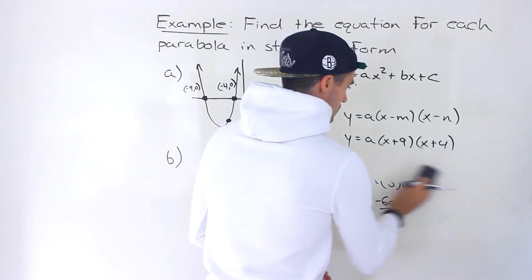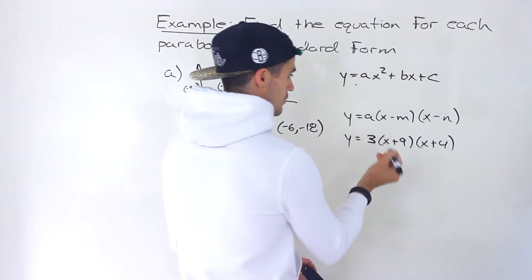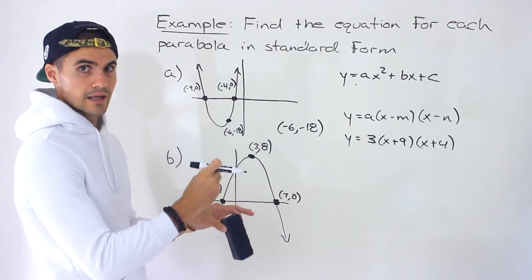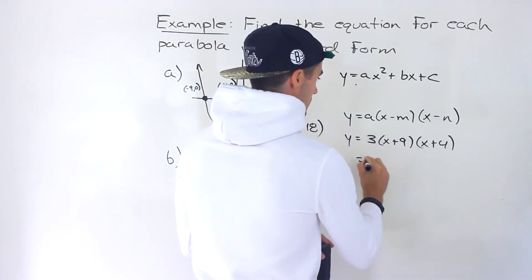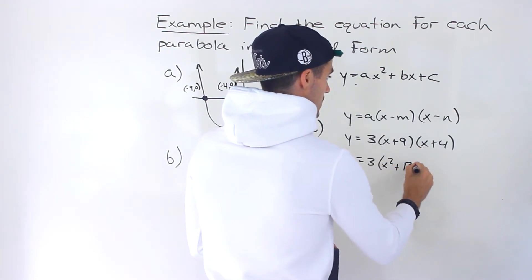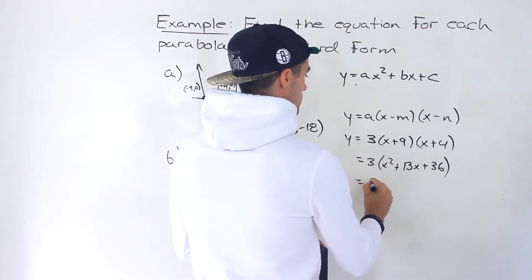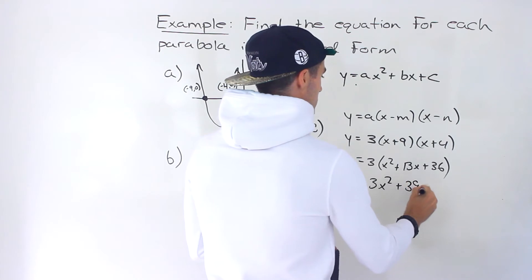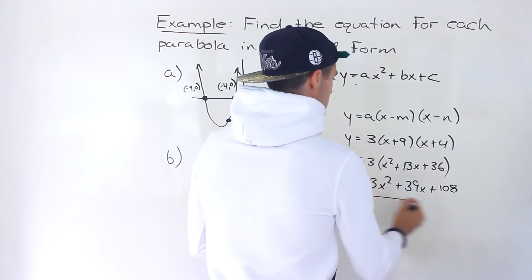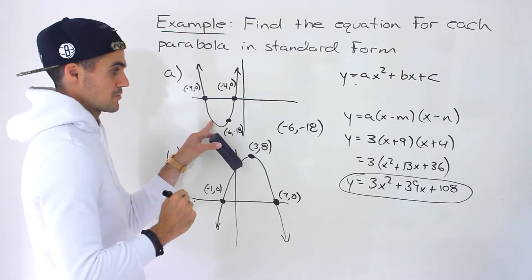The a value is 3, so it goes right here. Now we have the equation in factored form, but we need it in standard form, so we expand everything. We get 3 times (x squared plus 13x plus 36), which expands to 3x squared plus 39x plus 108. That is the standard form quadratic for this parabola.